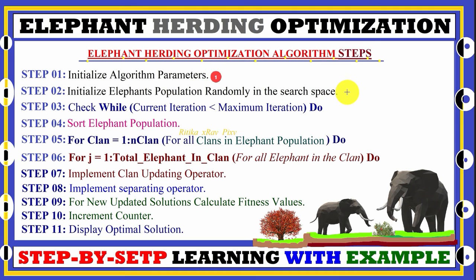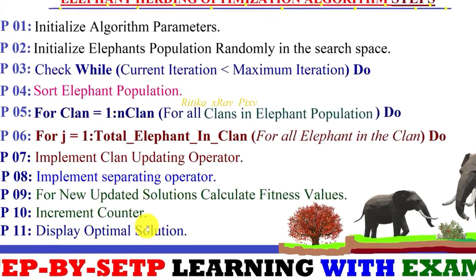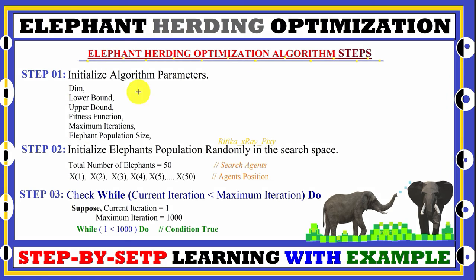Now we can see the different steps used in this algorithm. First, we initialize the algorithm parameters. Then we initialize the elephant population in the search space randomly. Then we check whether the current iteration is less than the maximum iteration. After that we sort the elephant population, update elephant positions, replace the worst elephant in the current population, calculate fitness values, increment the counter, and repeat until stopping criteria is met, then display the optimal solution.